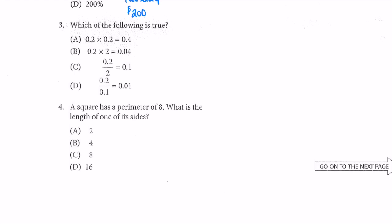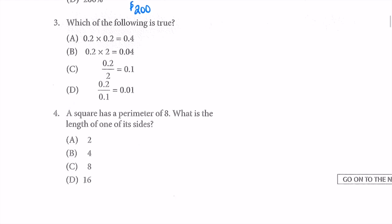Which of the following is true? I prefer to work with fractions rather than decimals, so we're going to convert these into fractions. For option A: 0.2 (which is 2/10) times 0.2 (again 2/10) equals 4/100, which is 0.04 — not 0.4. So A is not true. That means B is also incorrect.